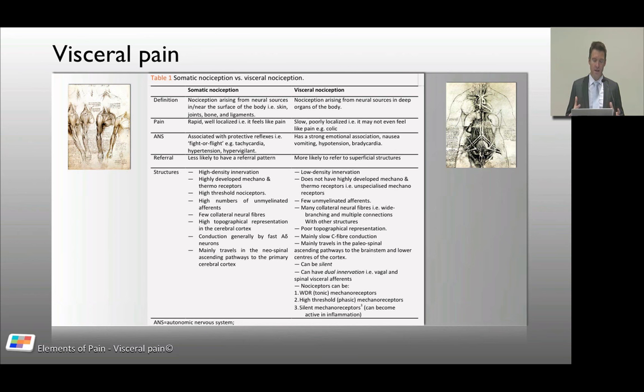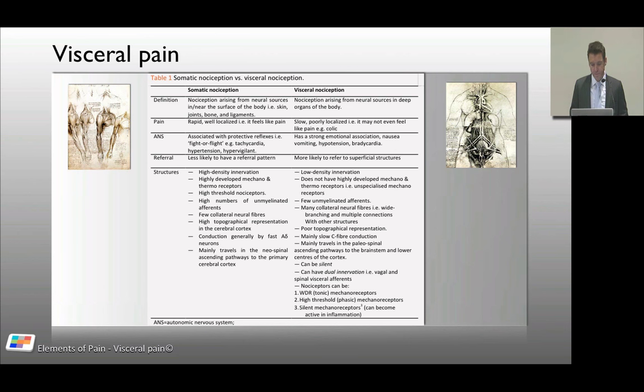Autonomic features differ between the two. Somatic nociception triggers the classic fight-or-flight autonomic response — hypervigilance, tachycardia, hypertension, sweating, dilated pupils. Visceral nociception tends to be more emotional, with more parasympathetic activity: nausea, vomiting, hypertension, and bradycardia.